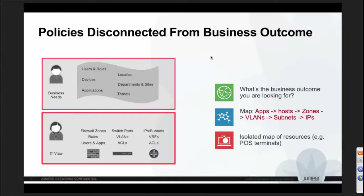Once you start doing this translation, after a couple of years when you look in the firewall there are hundreds and thousands of rules and no way to figure out why they're there — they're pretty rigid. If the finance department adds one more server, somebody has to figure out the translation and add those rules. If a server is removed, people forget to remove those rules. So there is a big disconnect requiring manual intervention from business outcome to actual policy configuration.